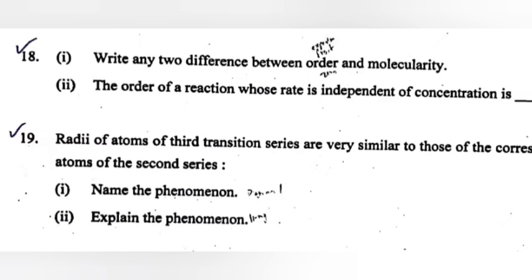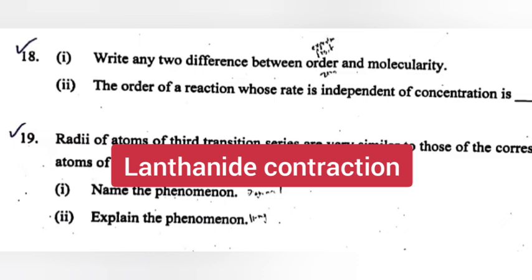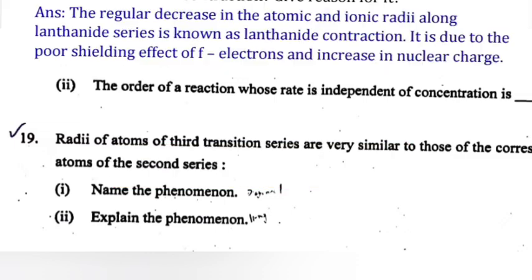Question 19: Radii of atoms of the third transition series are very similar to those of the corresponding atoms of the second series. Part 1: Name the phenomenon. Answer: Lanthanoid contraction. Part 2: Explain the phenomenon. Answer: The regular decrease in the atomic and ionic radii along the lanthanoid series is known as lanthanoid contraction. It is due to the poor shielding effect of f-electrons and increase in nuclear charge.